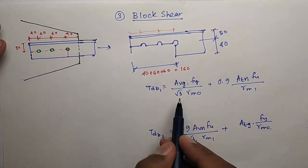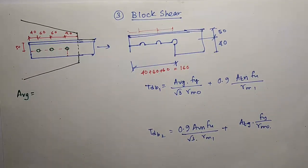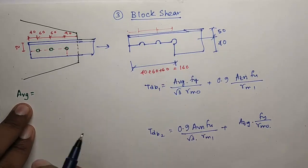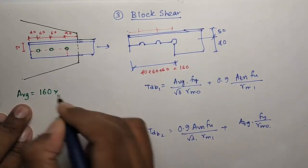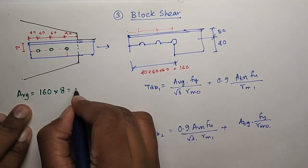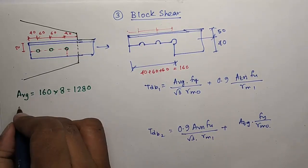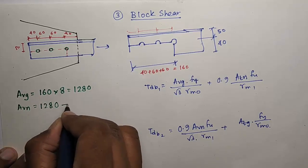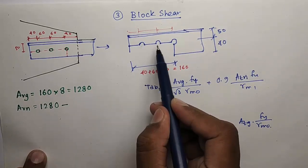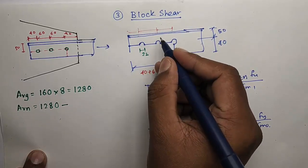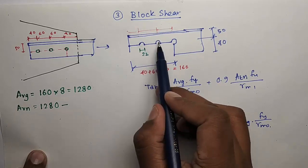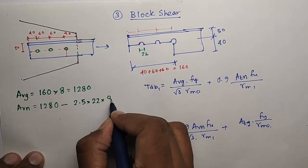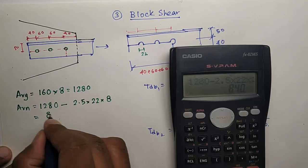You have to calculate AVG, ATN, AVN, and ATG. AVG is gross area of this section, V means along the force, so this portion. This length is 160 and thickness is 8, so this is AVG. What is AVN? Along same direction, the net area. So 1280 minus, subtract this area. This distance is 22, thickness is 8, and there are two full holes and one half, so total 2.5 into 22 into 8. So we get 840 millimeter square.